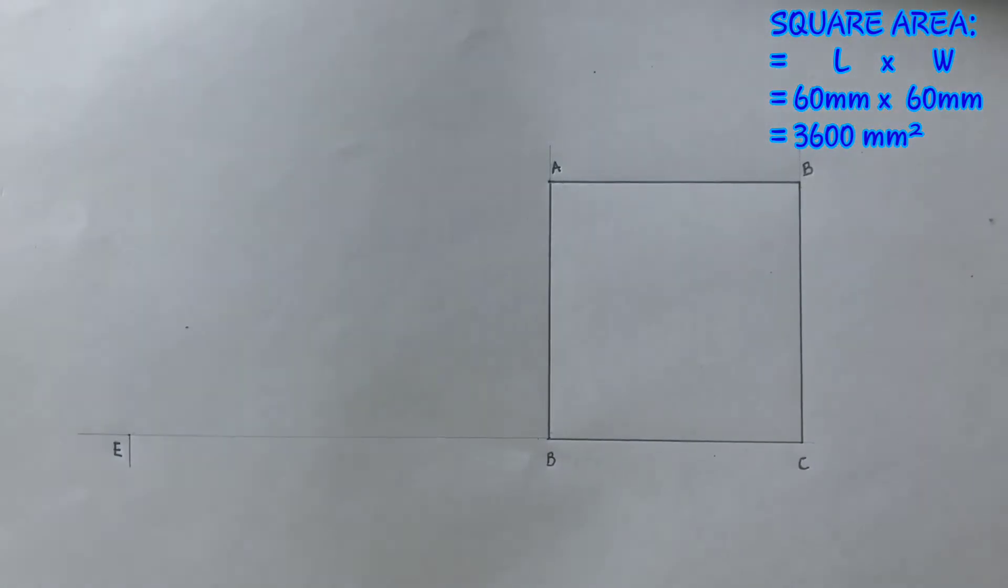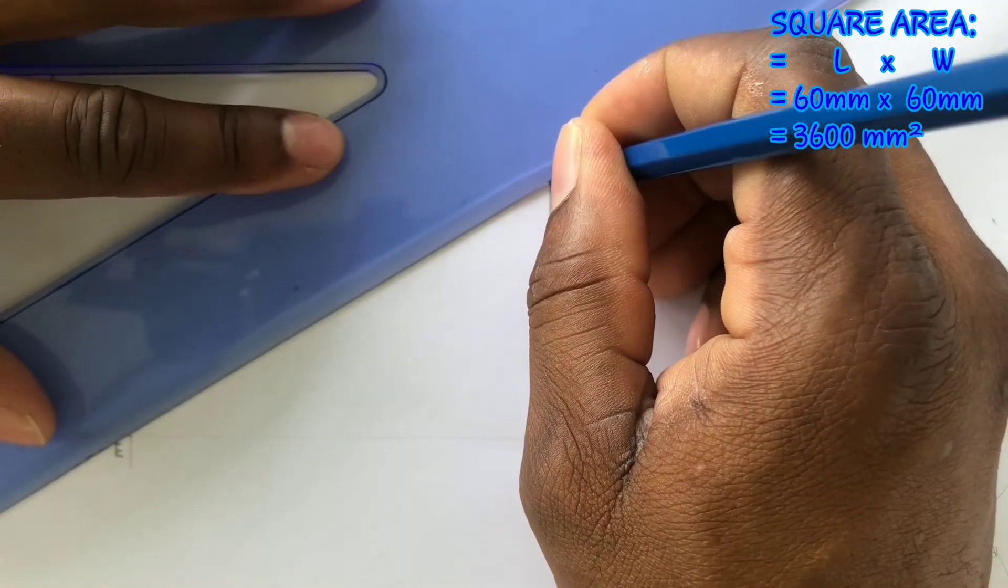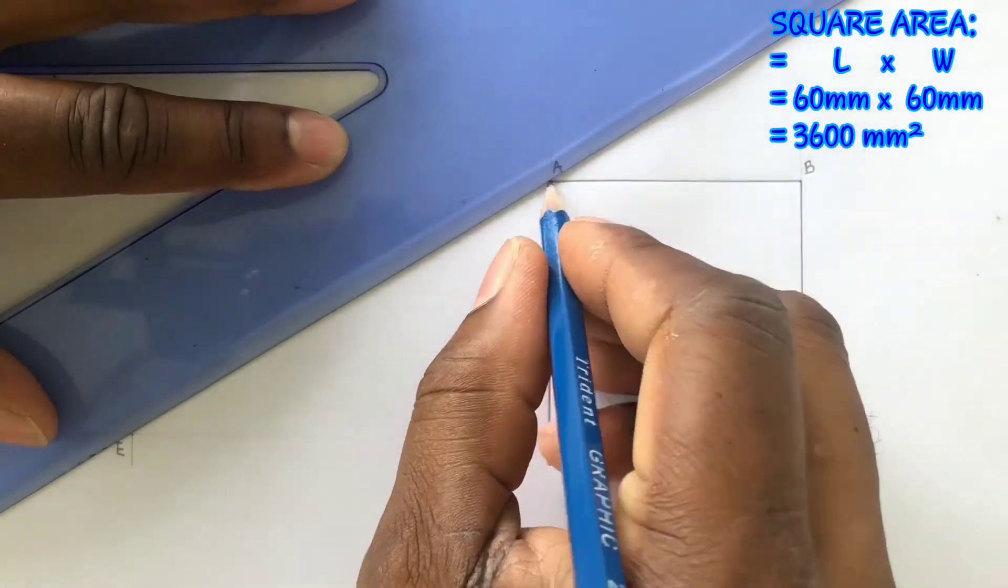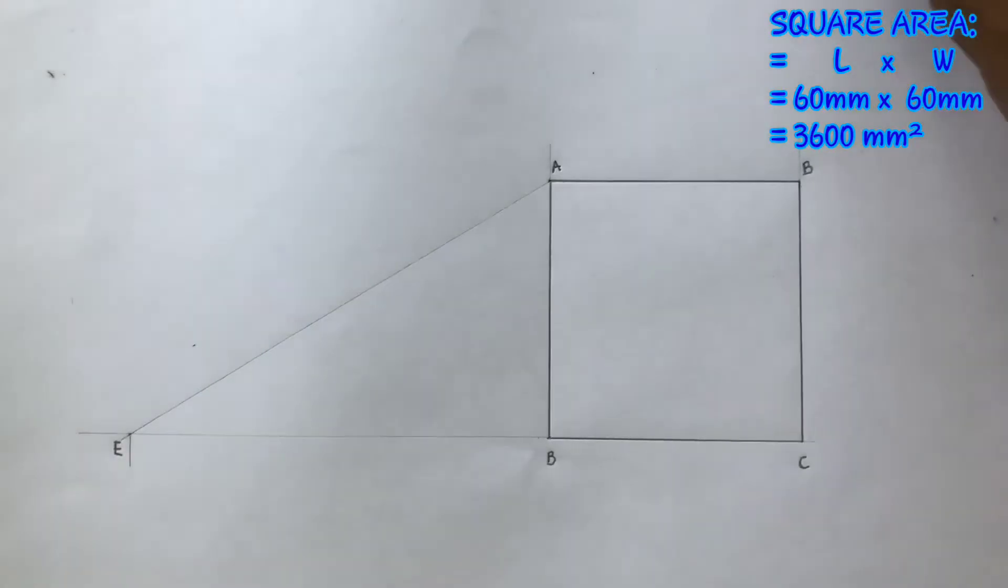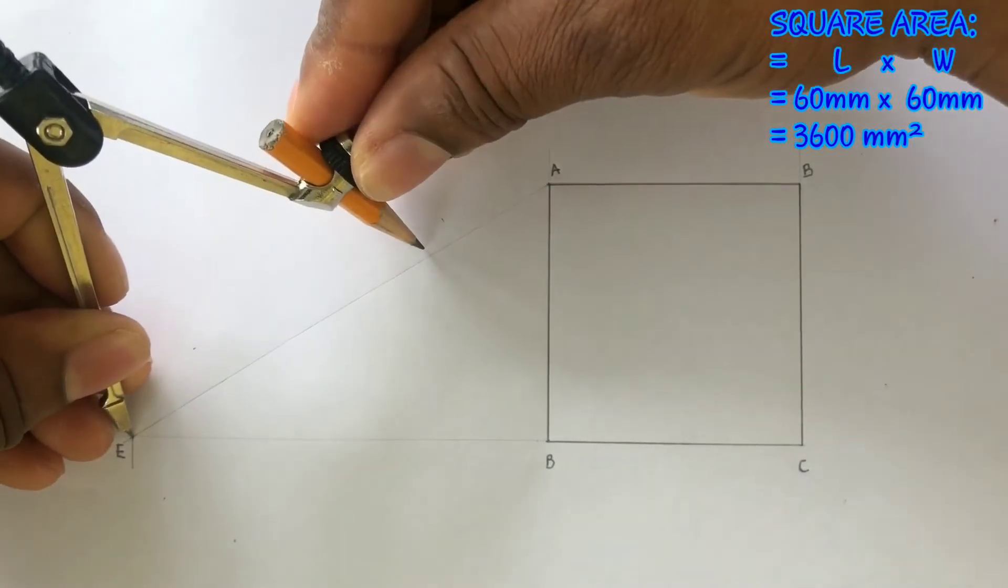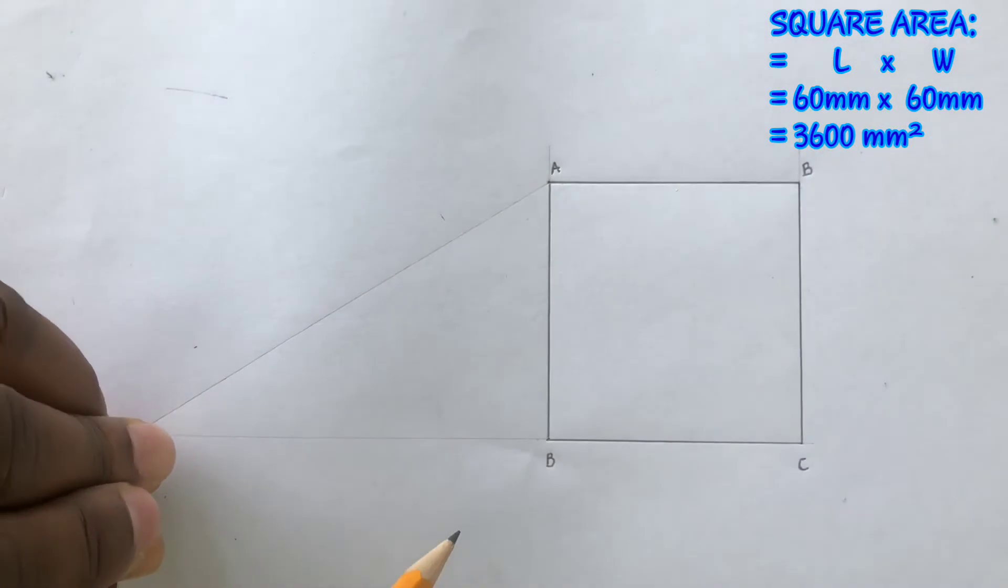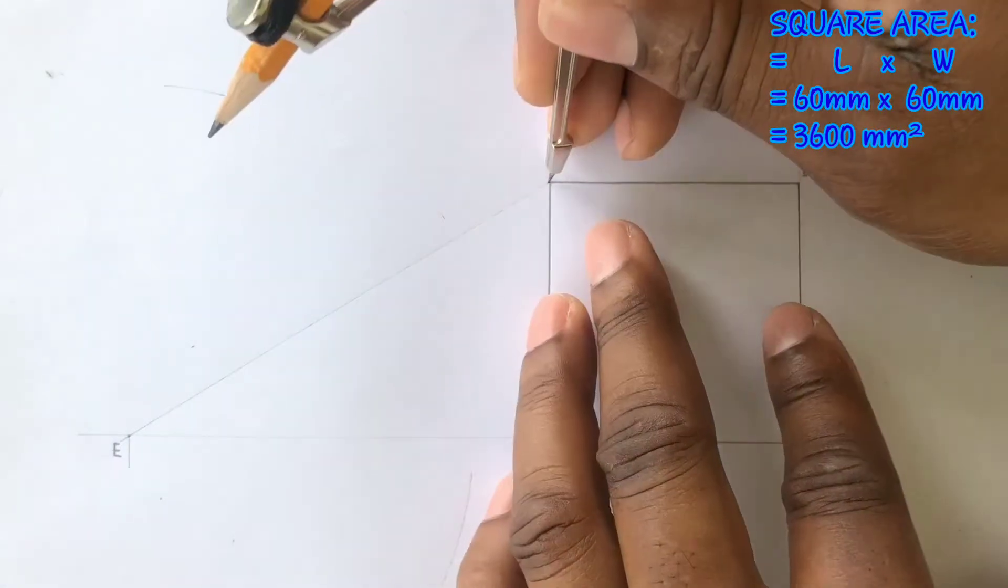Now from point A draw a construction line to point E. You will now bisect the line EA. Open your compass to more than half of EA and scribe intersecting arcs from E and from A above and below the line EA.